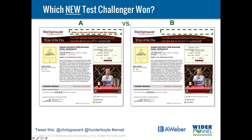Variation A had 'order in the next X hours, minutes, and seconds to get 99 cents shipping' — a countdown timer. Visitors would be sitting on the landing page and this countdown would be counting down, saying you've only got 3 hours and 43 minutes left, then count down to the next minute. Variation B did not have that element — everything else was the same. This was an isolation to test urgency. Which one won?